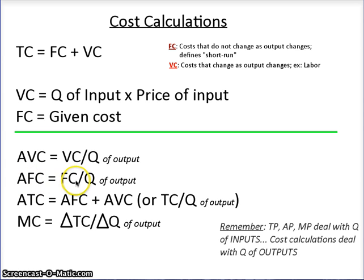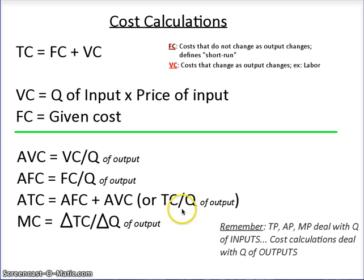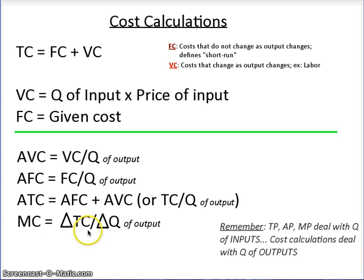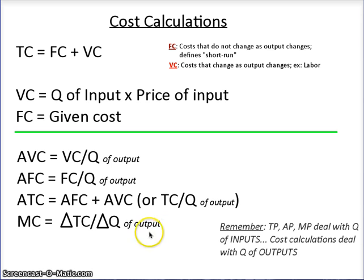Average fixed cost is fixed cost divided by quantity of output. Average total cost is average fixed cost plus average variable cost, or total cost divided by quantity of output. Marginal cost is the change in total cost over the change in quantity of output. Those are your math formulas.